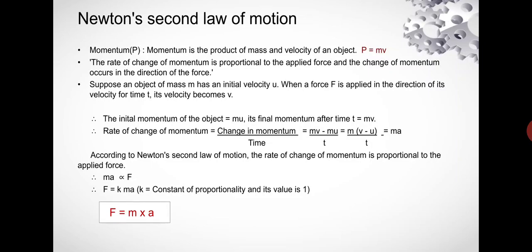Therefore, ma ∝ F. F = k × ma, where k is the constant of proportionality and its value is 1.